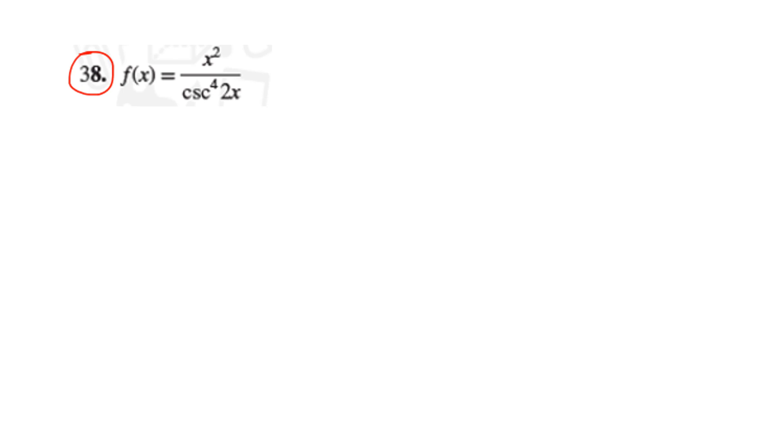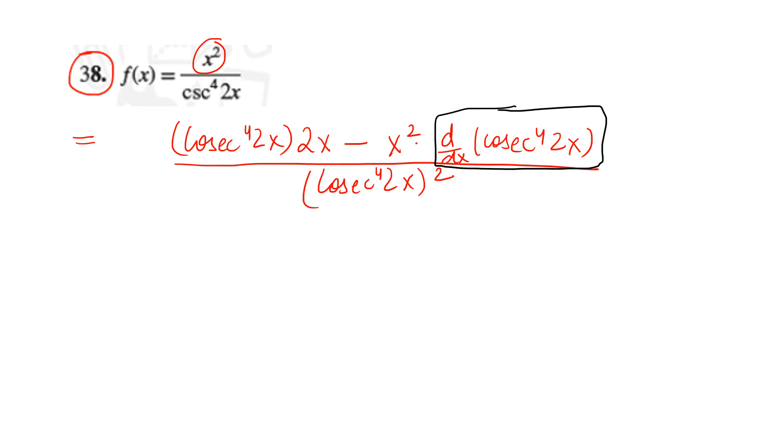Let's now solve a question on quotient rule. Here we are going to apply a mix of quotient rule, chain rule, and power rule. As you see there are powers, there is division—division means quotient rule. In the denominator the function is having inner function 2x and outer function cosecant to the power 4. So we are going to be applying all of that. Let's first apply the division rule.